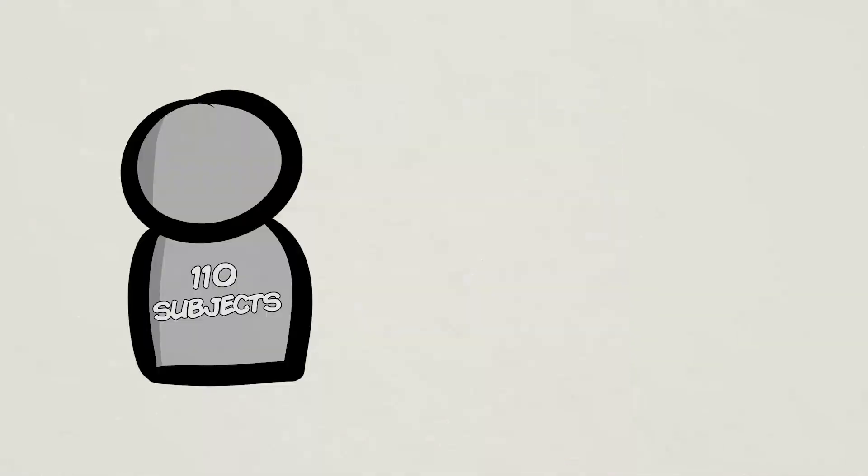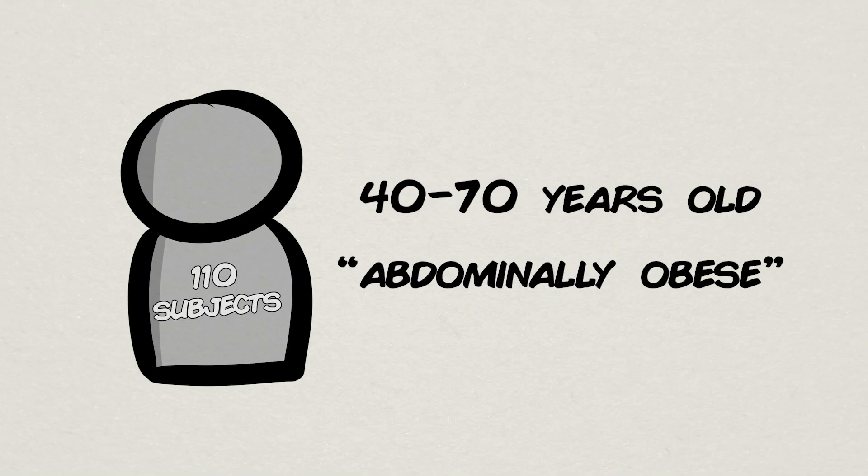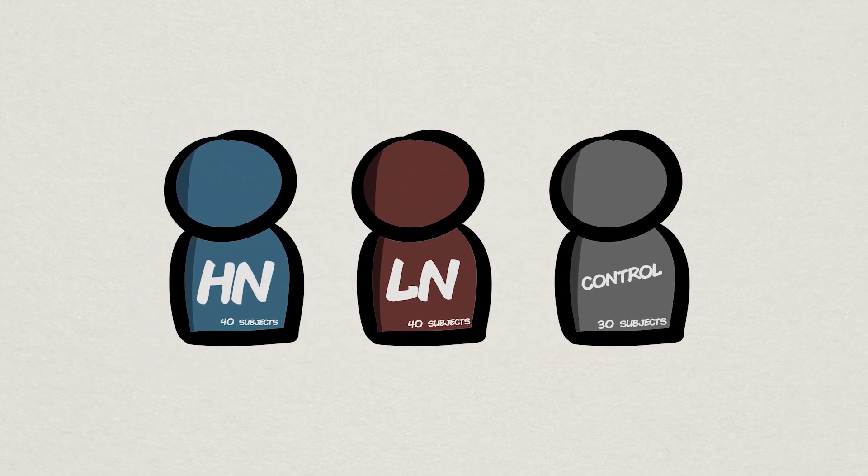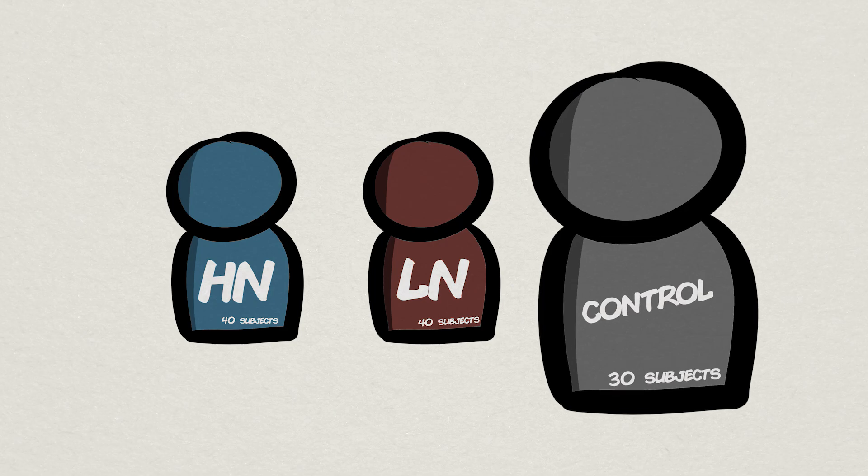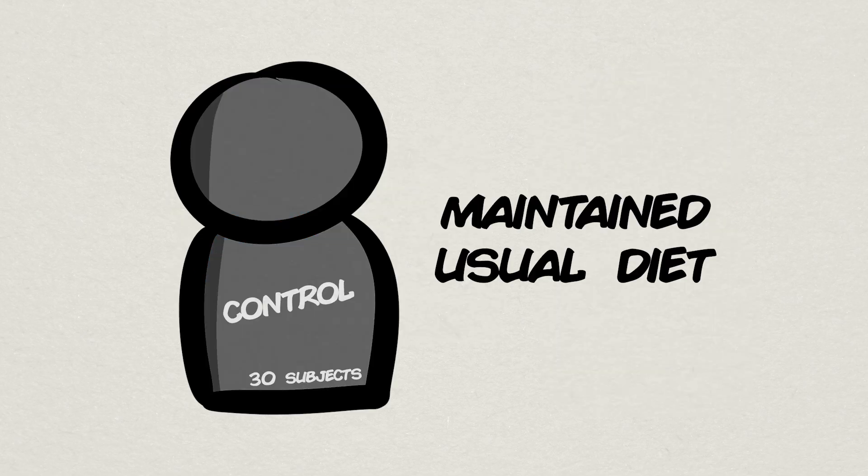In this 12-week study, 110 participants within the ages of 40 to 70, classified as abdominally obese, were split into three different groups. We have the high-nutrients group, the low-nutrients group, and the control group. The control group unsurprisingly stuck to their habitual diet.